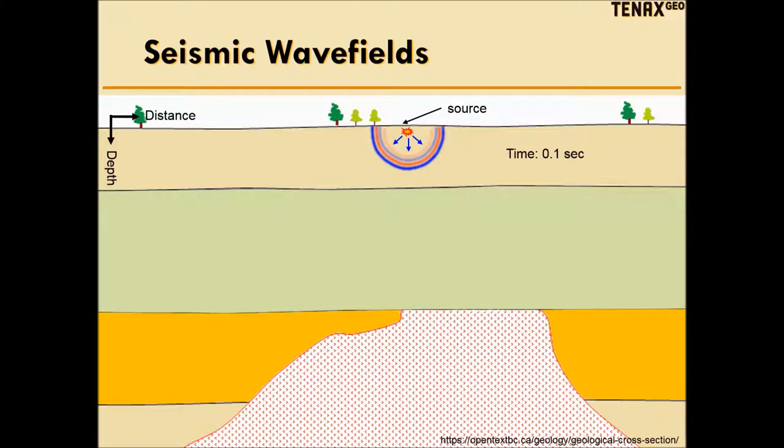Here's a cartoon showing us firing a buried dynamite source into the ground and looking at the P wave after 0.1 seconds. The ground has several layers corresponding to different rock types. If you watched my previous video, What is a Seismic Wave, then you know that the wavefront expands away from the source location in a spherical shape.